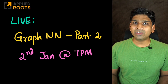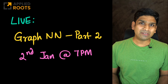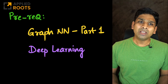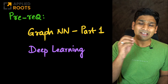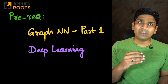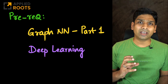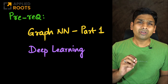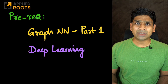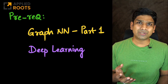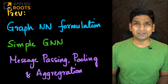This live session will be part 2 of graph neural networks that we started in the previous week. The prerequisites for this session are that you should have gone through graph neural networks part 1, where we described the basics and gave a thorough introduction to the topic. You're also expected to know the basics of deep learning algorithms and architectures, starting with convolutional neural networks all the way up to attention models.